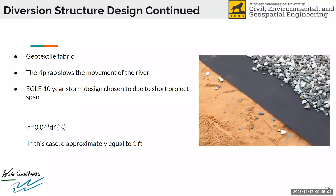We also solved for the depth of the channel. The entire channel is lined in geotextile fabric, which is a permeable fabric — only water can pass through it, keeping any soils from eroding through the fabric. On top of that, we're putting riprap, which will line the whole channel length. The riprap will slow the water down to a safer speed, and since we have a straight-line channel, it won't get out of control.